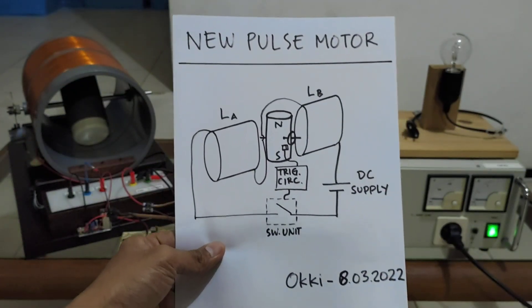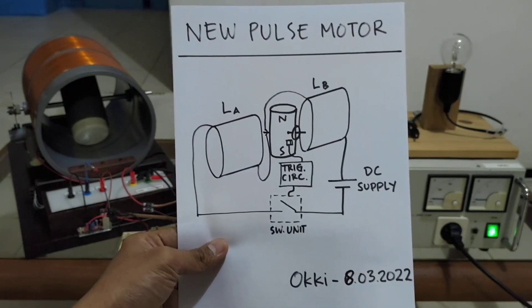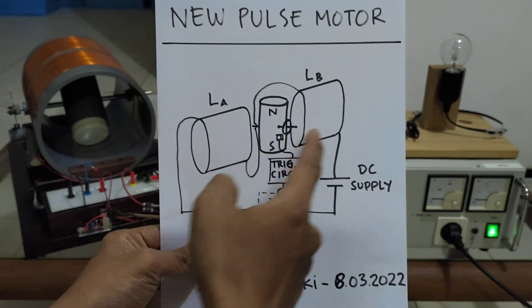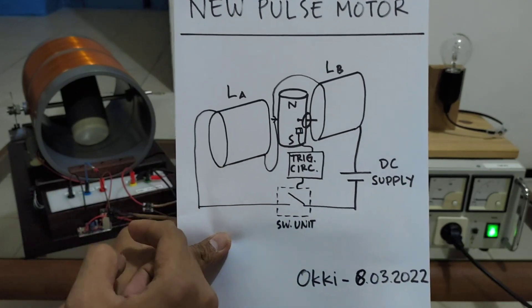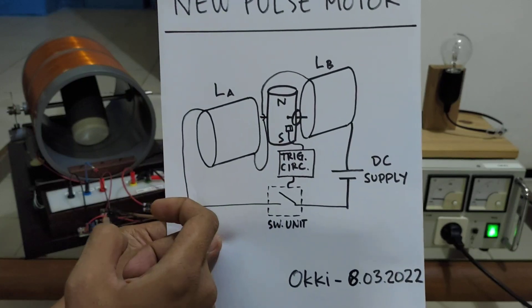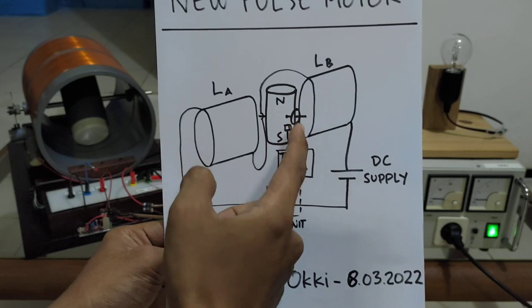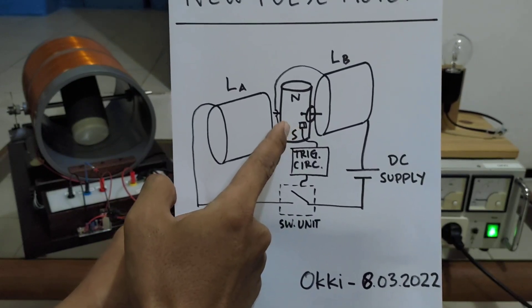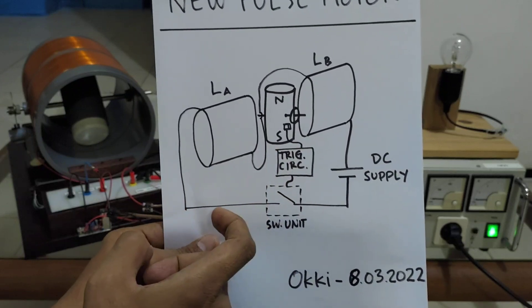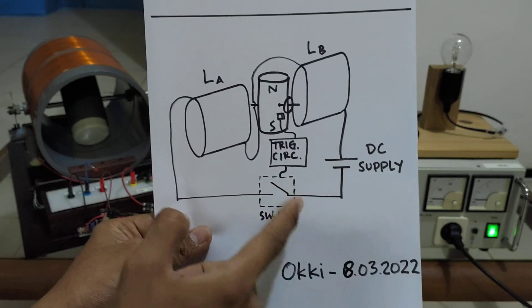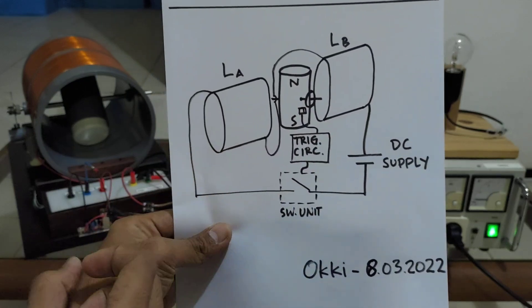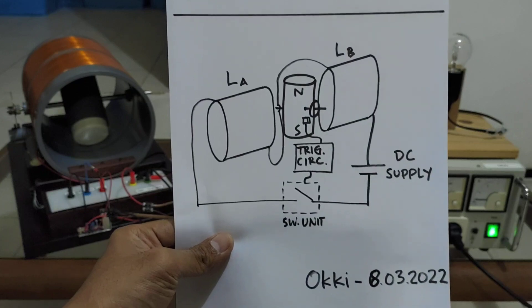Here you can see the simplified schematic of my motor. Here I have two coils, actually these are one coil. Here I have a rotor, a permanent magnet rotor. Here I have the timing wheel, and I use optical interrupter as a sensor. And here I have trigger circuit, and here I have my switching unit. And to power this coil I use DC power supply.